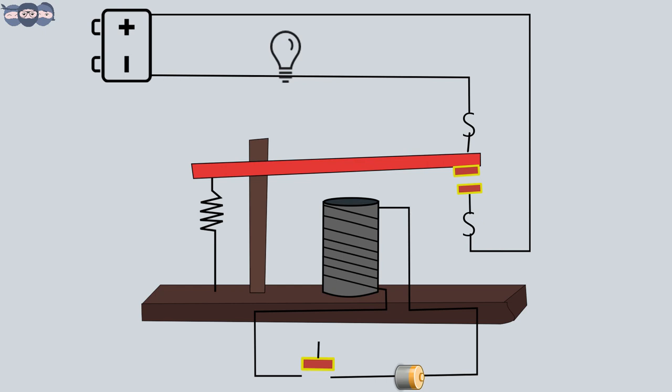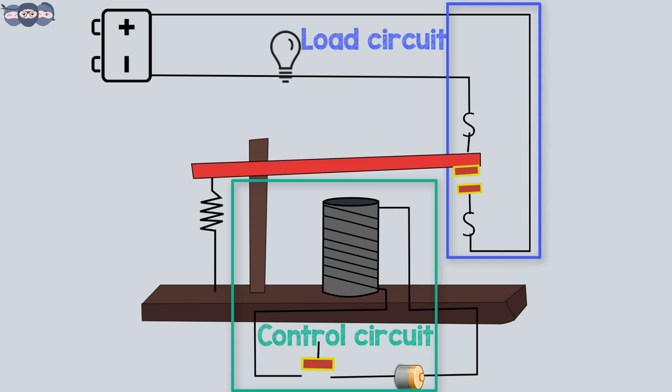A relay consists of two separate and completely independent circuits. One is called the control circuit and another is called the load circuit. One circuit drives another circuit. Let's understand the components that make a relay.